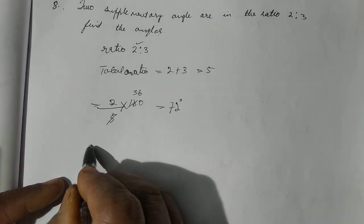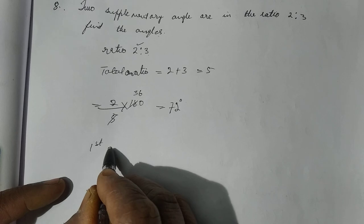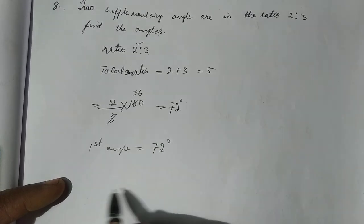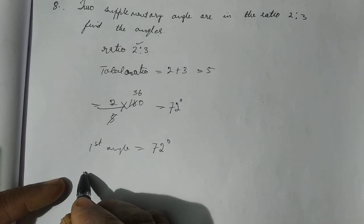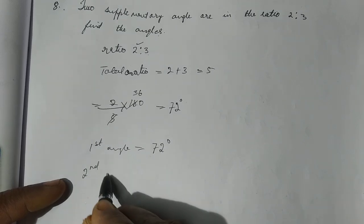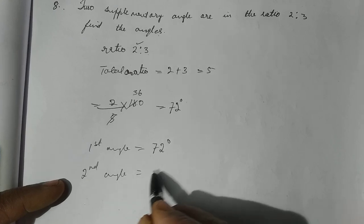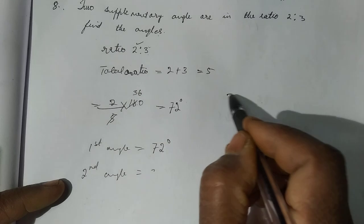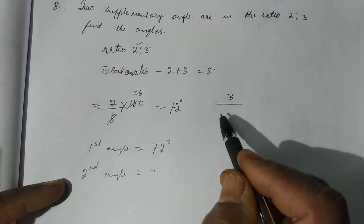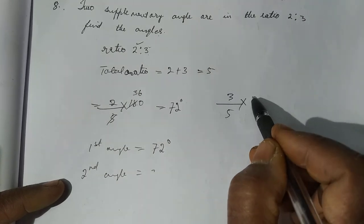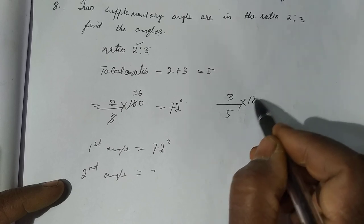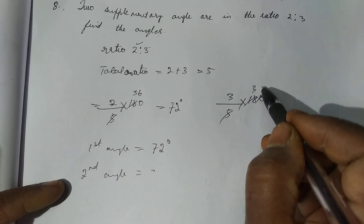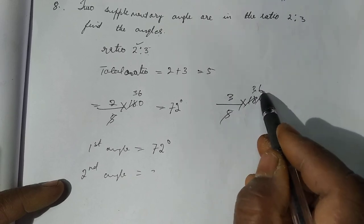The first angle is 72 degrees. This one is the second angle. This one is 3. 3 by total ratio to 5. Multiply by 180. 5, 3, 6, or 5, 6, or... This one is 36.